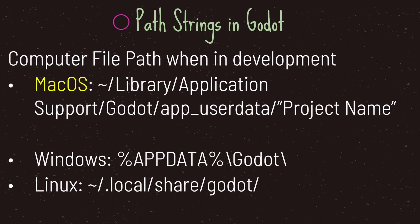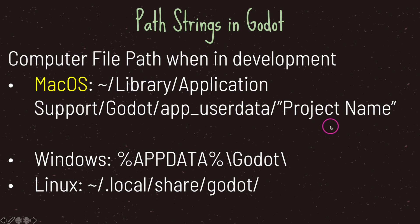If you want to debug what you're writing to a file, keep in mind that the file paths in development are not the same as in production. On macOS your files will be saved under: user folder → Library → Application Support → Godot → app_userdata → your project name. For Windows and Linux the paths will be similar using their respective file path conventions.